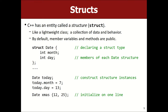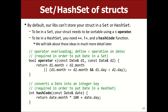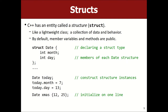You can say date today and set its month to 7 and day to 13. Or you can create it with curly braces and the values initialize the fields in order. This is the universal initializer syntax added in C++ 2011 — you can initialize almost anything by putting curly braces with values in the order they're declared. That's why vectors and structs and almost any type now can be initialized that way.